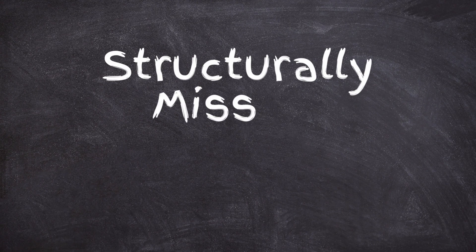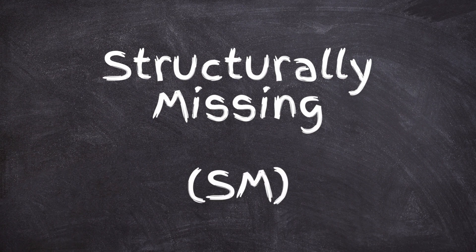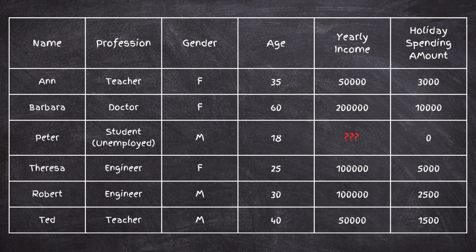The fourth type is structurally missing data — data that is expected to be missing for a logical reason. For example, if Peter is a student and unemployed, we would expect his income value to be empty since he doesn't have a job. Because of this, his missing income is structurally missing data.